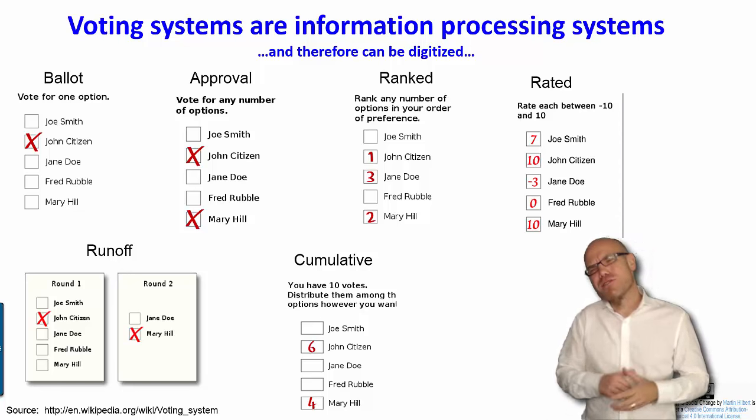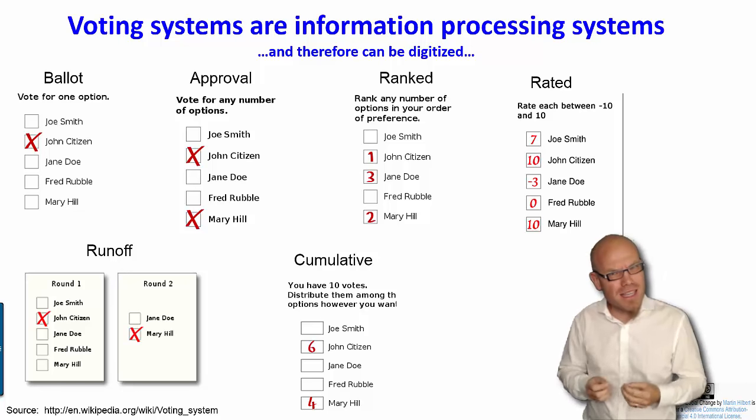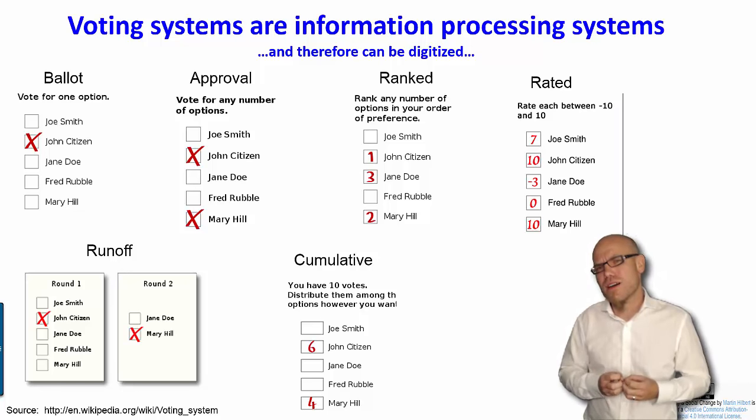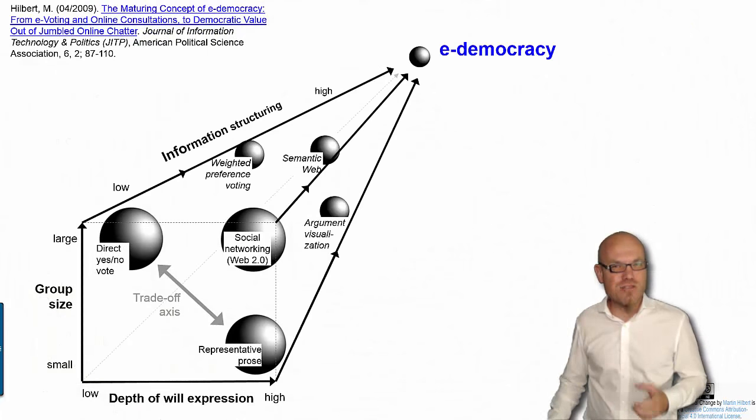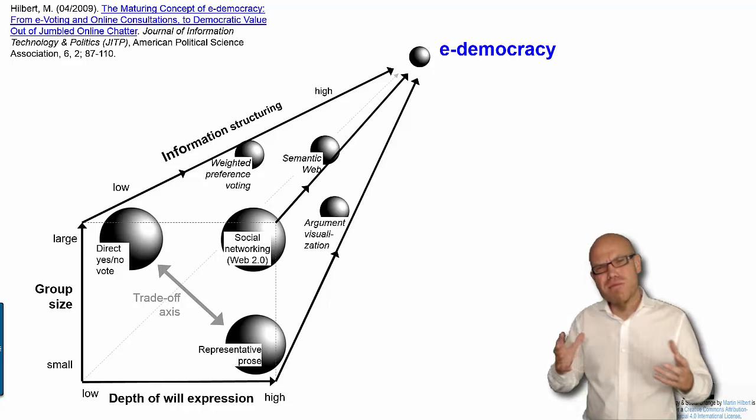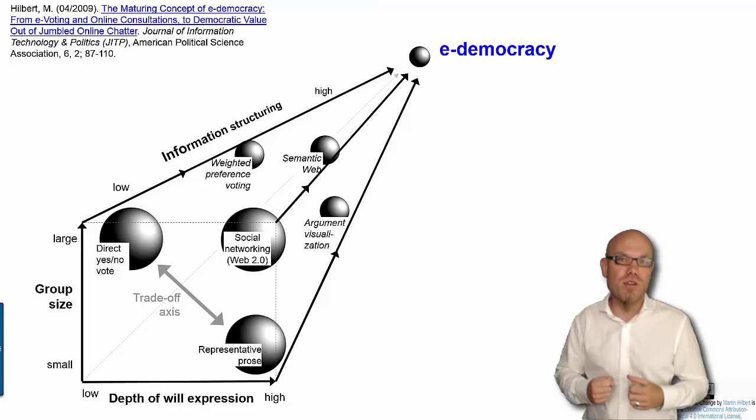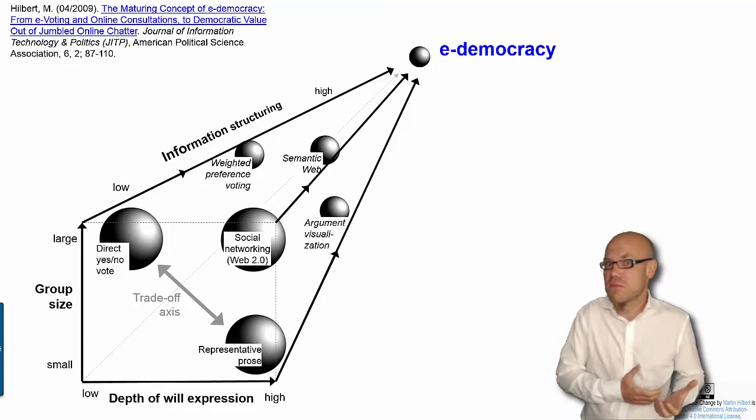Which one is the best way of getting more information out of the people? That's the second question. And a lot of active research will need to be done to find the optimal ways of how to formulate democracy. But the basic premise is that information processing is not the problem anymore. It was in the past, but e-democracy can help us to transcend this trade-off between group size and depth of will expression. And there are many more different ways of how we can bring democracy to life instead of just simply say, you have a representative democracy, or you have a simple ballot vote.